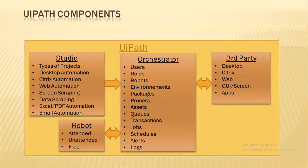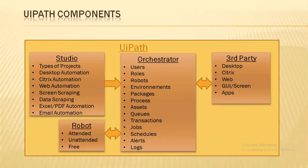These are the lower-level components you can see in Studio. Types of projects include: sequence projects, state machine projects, and flowchart projects. Different automation types: desktop automation covers Excel, Calculator, Word and other desktop applications; Citrix automation is for interacting with remote or virtual machines; web automation is for interacting with your portals. Screen scraping is for scraping fields from portals; data scraping is for scraping data in structured format.